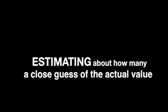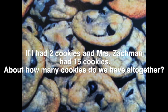When we estimate, we make a decision of about how many of an item there are. Estimating is making a close guess about the actual value of something. In the case of the cookies, we can guess that since Mrs. Zachman had 15 and I had 2, the total number isn't going to be many more than 20, but it's obviously going to be more than 15. We could estimate that we have about 20 cookies.